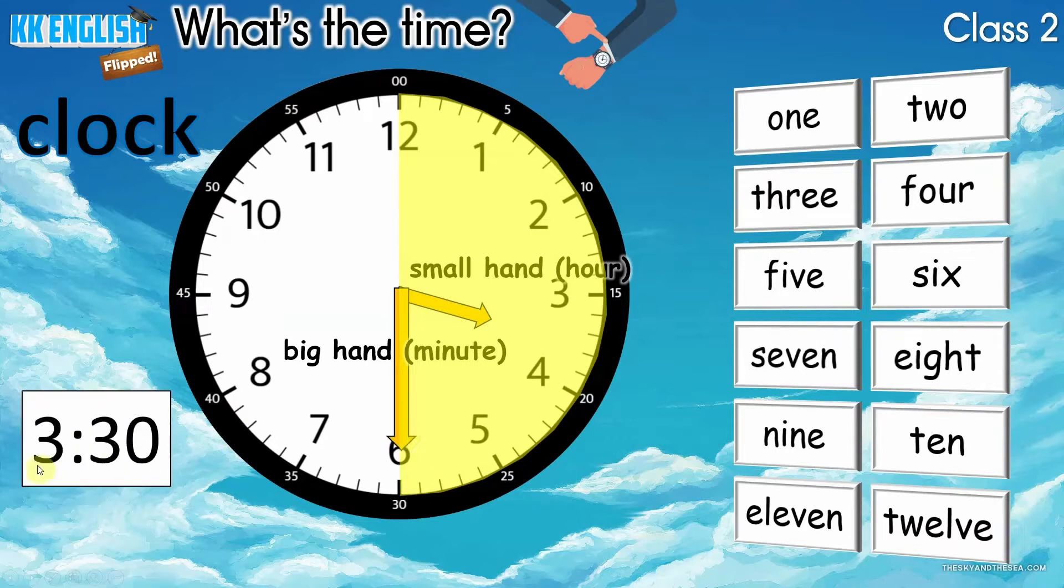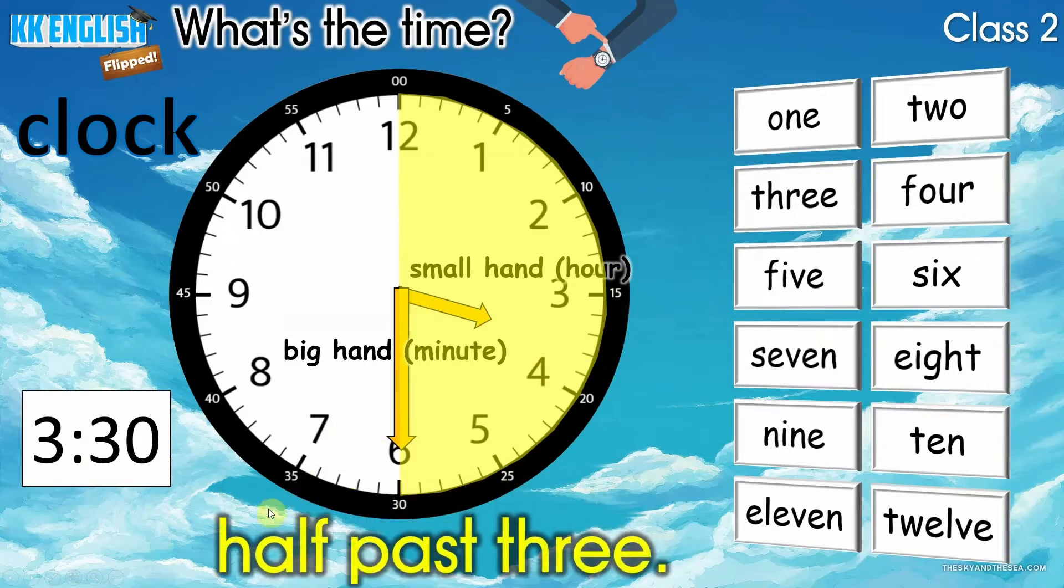Yes, it is 3.30. 三点三十分,或者叫三点半. How do we say the time in English? What's the time? Let's read. Half past three. Half past three. 三点过了一半,三点半. In English, the full sentence, 那完整的回答方式是. It's half past three. 现在三点过了一半哦.